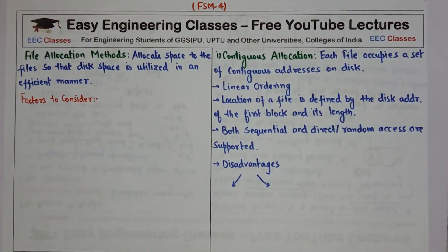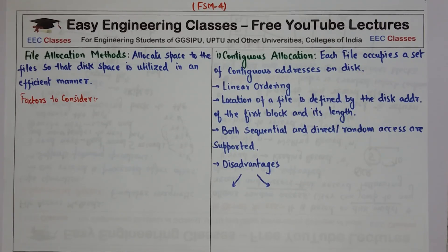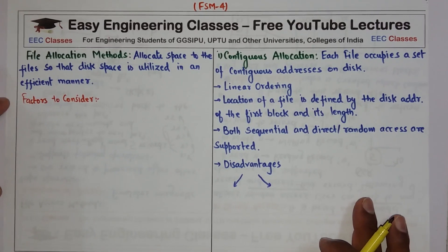Hello everyone. In this video the topic is file allocation methods, and this is the fourth lecture on file system management of operating system. File allocation method means allocating space to the file so that the disk space is utilized in an efficient manner. There are certain factors that need to be considered before allocating space to the file.